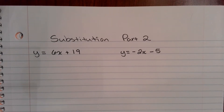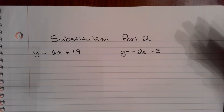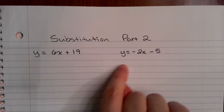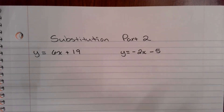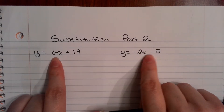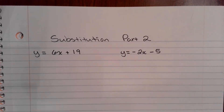Welcome to part two of substitution. What we learned previously is that if you've got two equations set as y equals — or even x equals — as long as one variable is isolated on both and it's the same variable, you can set them equal to each other, solve for x, substitute back in to find y, and use the other equation to check. Let me go over an example of this one more time.